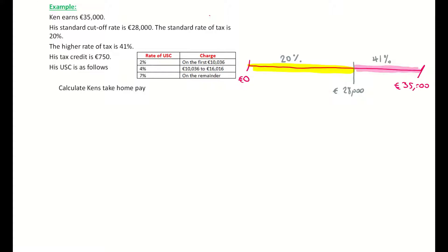Let's look at the first 28,000 euro. I'm going to find 20 percent of 28,000 euro. 28,000 at 20 percent gives 5,600 euro — calculated by multiplying 28,000 by 0.2, or dividing by 100 and multiplying by 20. That's the lower or standard rate of tax, shown in yellow on the number line.